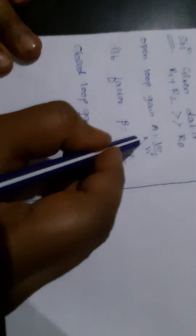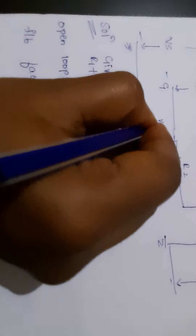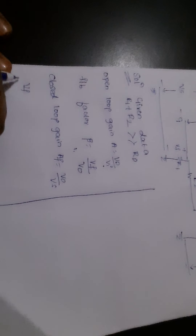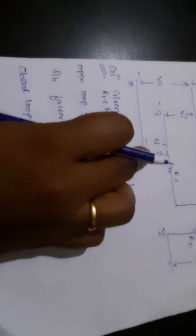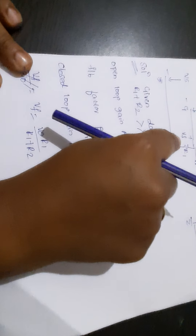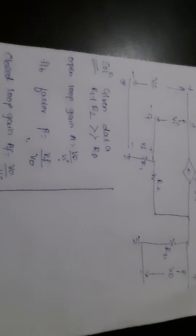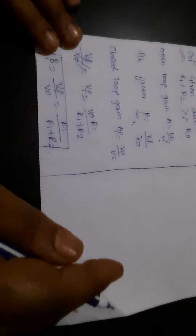First step is to find V_naught by Vi, and also the beta factor. We know that at this point the feedback voltage is generated. Vf is equals to V_naught into r1 upon r1 plus r2. Therefore, Vf upon V_naught equals r1 upon r1 plus r2. This is the expression for beta.